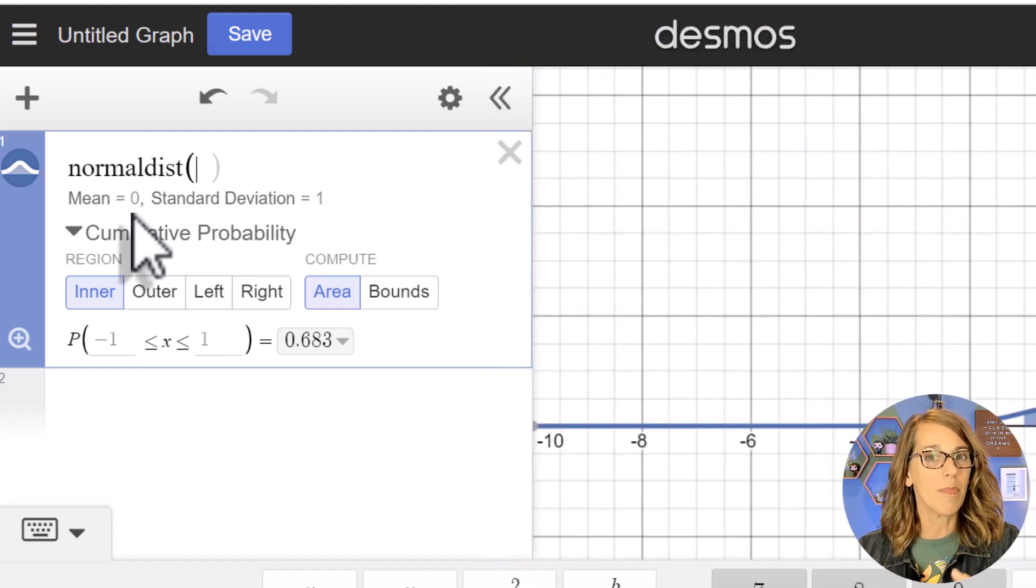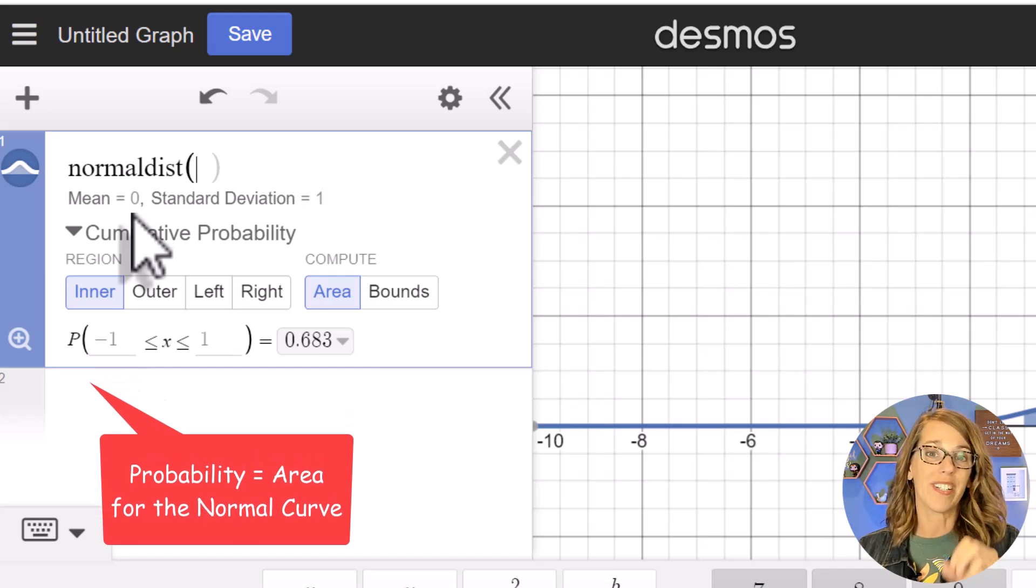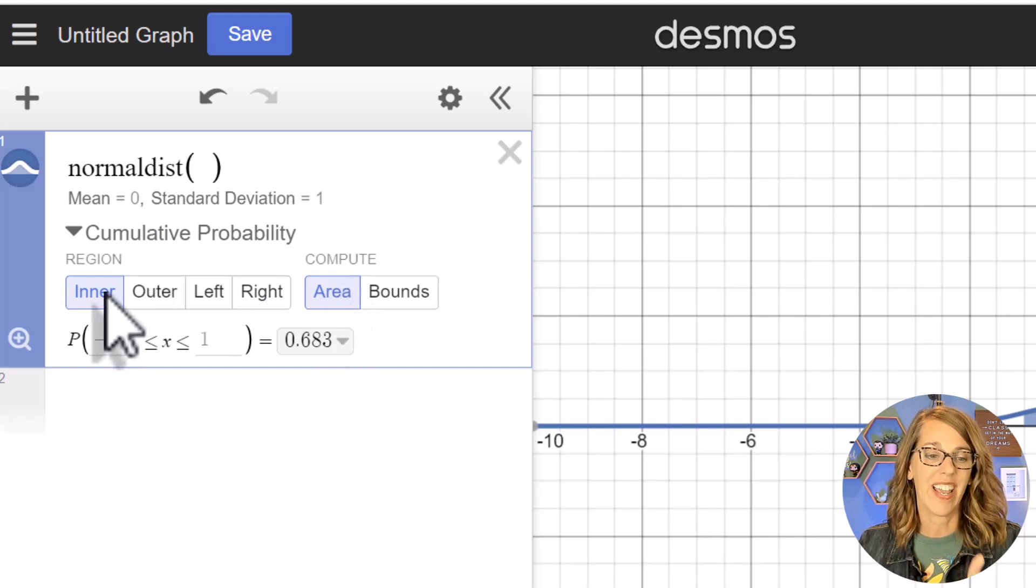It's asking for the probability that x is between two different values. These are going to be our z-scores and I want to make sure that I've got area clicked. So I'm ready to go.